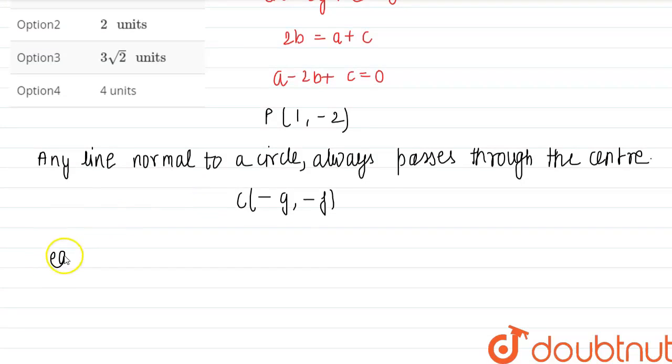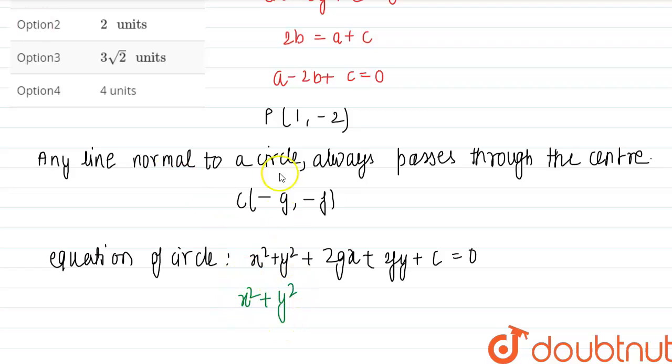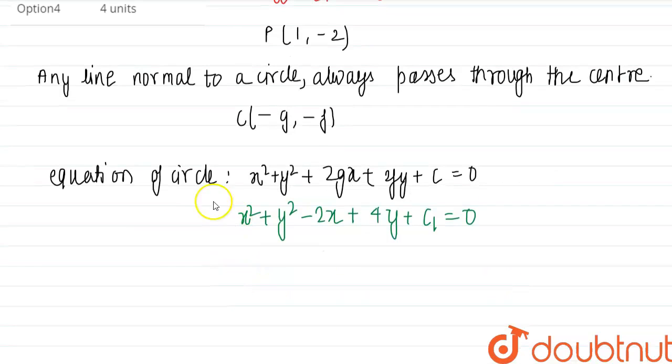So now we can write the equation of the circle that is x square plus y square plus 2gx plus 2fy plus c equal to 0. So now placing the values, this is x square plus y square, g is minus 1 so this will be minus 2x. f is 2 so this is plus of 4y plus c, we can write this as c1 equal to 0 as this is the equation of the first circle.